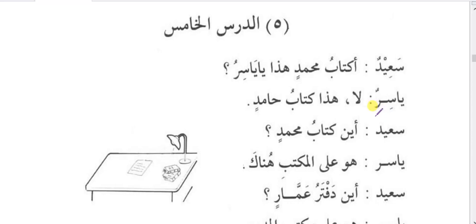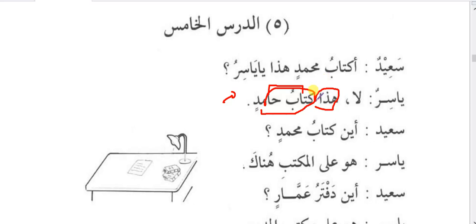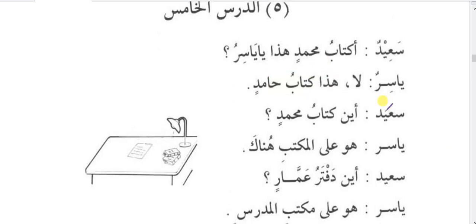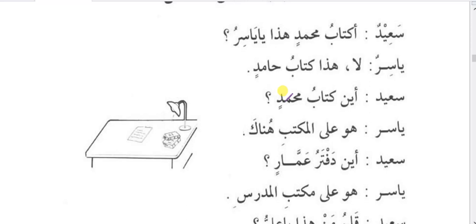Practice conversation: Sayeedun asks — a kitabu muhammadin haza ya yasiru — is this the book of Muhammad, O Yasir? Yasirun says: la — no. Haza kitabu haamidin — this is the book of Hamid. So kitabu haamidin is muzaaf-muzaafilihi as khabar, and haza is mubtada. Ayna kitabu muhammadin — where is Muhammad's book? Yasirun says: huwa alal-maktabi hunaka — it is on the table, there. Hunaka means 'there.'